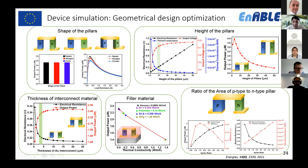Regarding pillar height, increasing height increases electrical resistance linearly, but reduces overall thermal conductance. Voltage output increases up to about 10 micrometers and then shows almost no change. The peak output power occurs around 3 micrometers thickness, but maintaining a temperature gradient at such a small pillar height without active thermal management is very difficult. So around 10 micrometers was chosen as a good compromise.